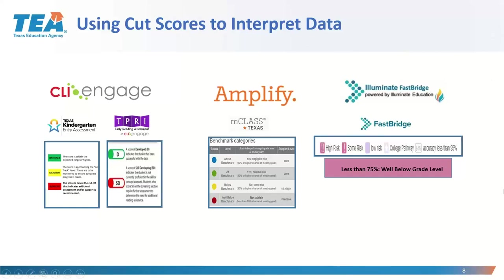CLI Engage covers TexKia for kindergarten and TPRI and Tejas-Lee for first and second grade. TexKia has three designations: green scores mean the student is on track; yellow means monitor, approaching the benchmark; and red means need support, well below benchmark. In TPRI, it's developed and still developing — only two designations. Tejas-Lee also has three designations — green, yellow, and red — and anything below green is considered below grade level.